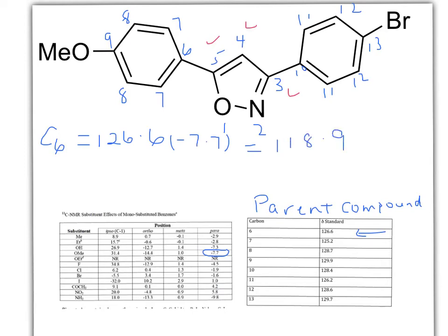If you want to calculate now, if you want to do C8, C8, if you look here, C8 is 128.7. And then you want to see C8 is actually ortho to the methoxy group. So you look for the ortho is minus 14.4. And that's equal to now 128.7 minus 14.4, so that's equal to 114.3.